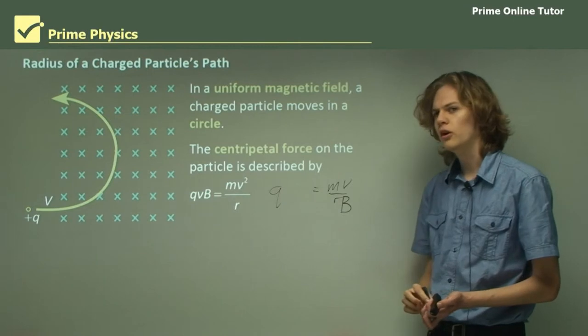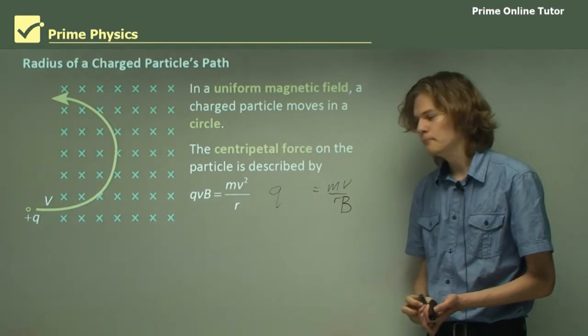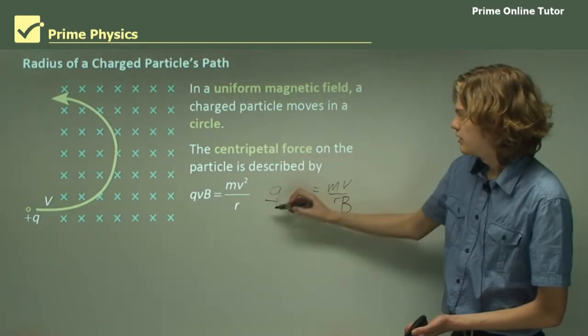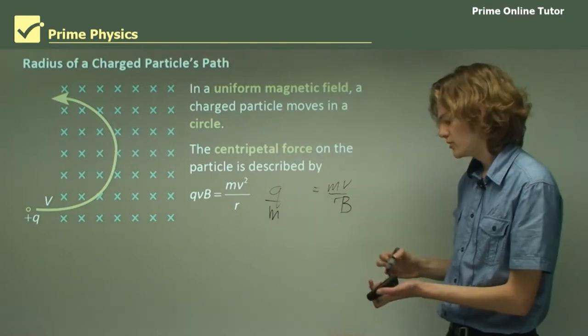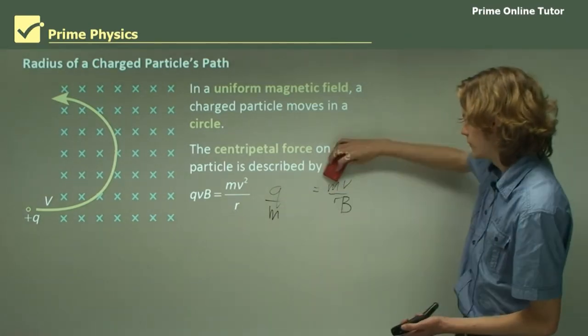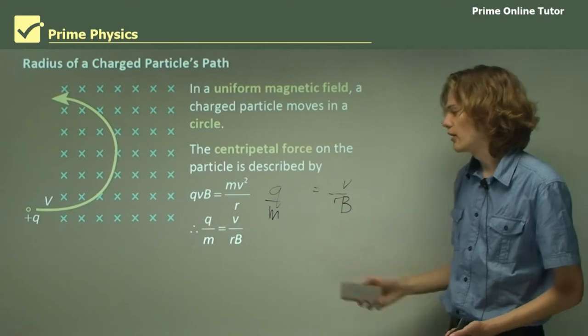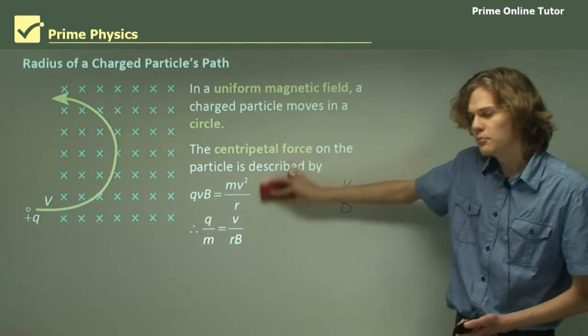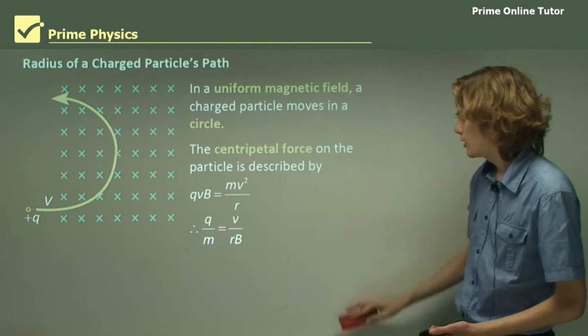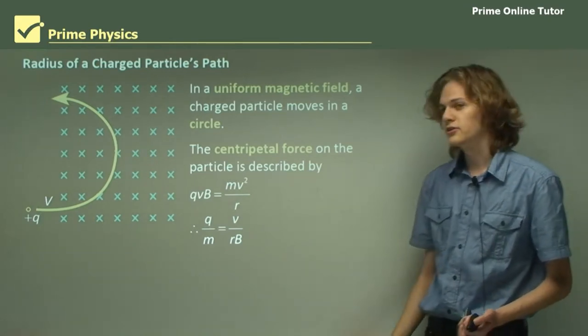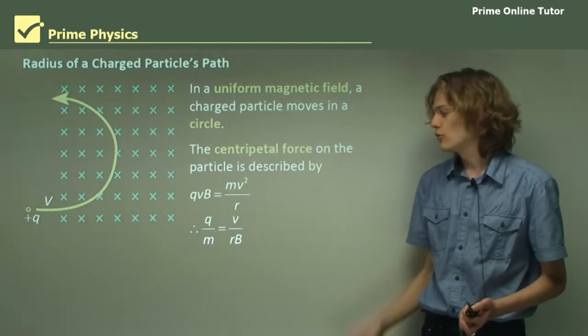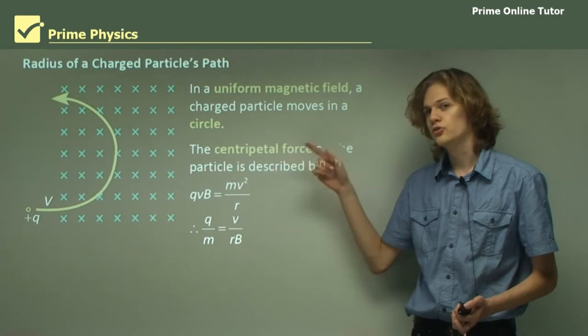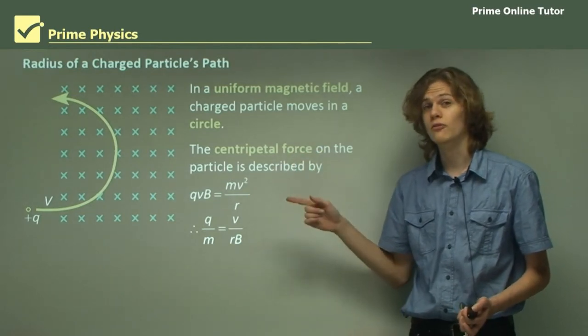Then we can divide both sides by m to get the charge to mass ratio on this side. We can also see this equation down here. That means that if we have a particle moving in a circle, we can find its charge to mass ratio by looking at the radius of the circle, the strength of the field, and knowing the velocity of the particle.